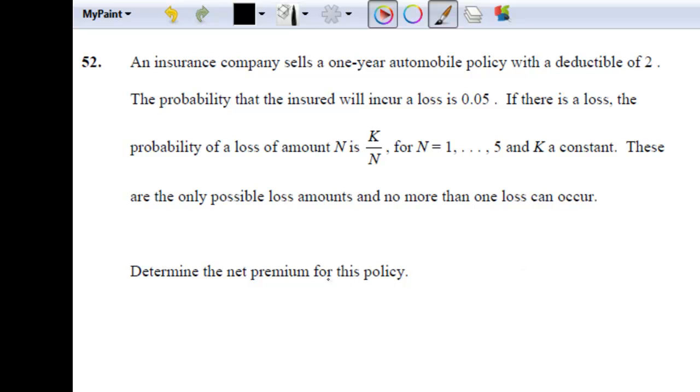If there is a loss, the probability that a loss of amount n is k over n, for n equals 1 through 5, and k a constant. These are the only possible loss amounts and no more than one loss can occur. Determine the net premium for this policy.